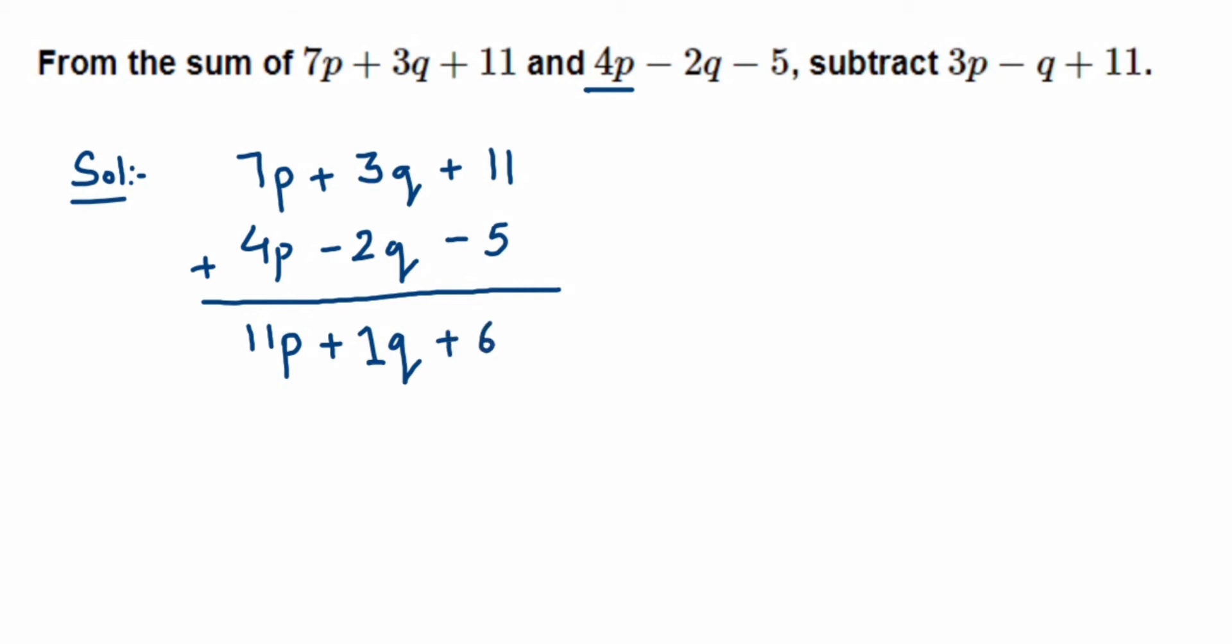Now from this result we have to subtract the third expression which is given. So let me write down this: 11p + q (or you can write 1q) + 6. Now from here I'm going to subtract 3p - q + 11.